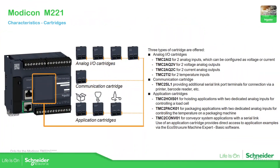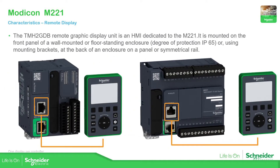You can use only one cartridge on this PLC. Only the standard versions allow cartridge use — you can see there is space available — while the book version has no place for a cartridge. The only version that accepts two cartridges is the 40-I/O version; all others accept just one.